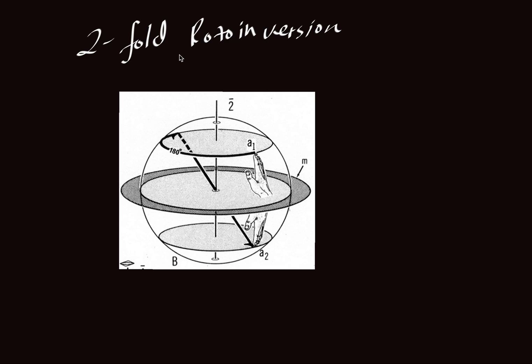So here we're looking at a two-fold rotoinversion. This example here is from a diagram from the textbook by Bloss. And for the two-fold rotational axis, it's shown here. The symbol, we'll just rewrite it here, it's a bar 2. So two-fold rotation, a bar 2.